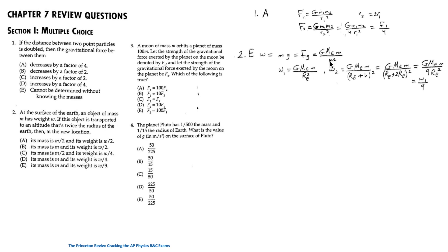The new distance from the center of the earth is r_e + h. Since the altitude h equals 2r_e, the total distance is 3r_e. This gives W2 = G·m_e·m / (3r_e)² = G·m_e·m / 9r_e², which equals W1 / 9. So the answer is E.